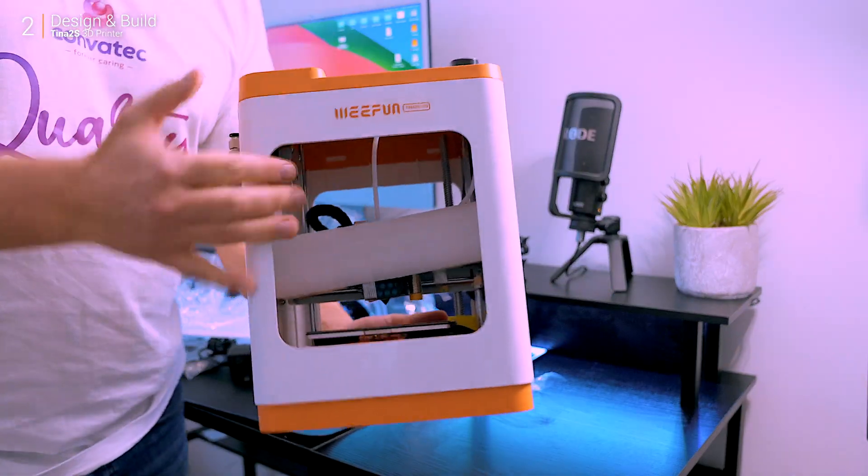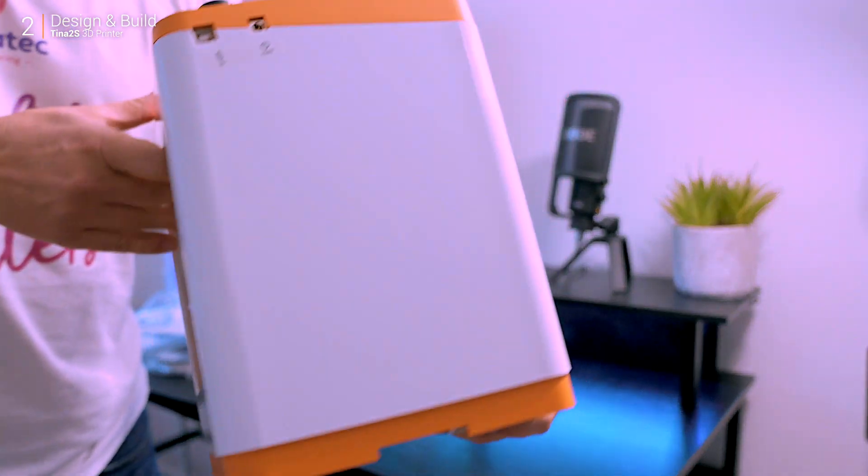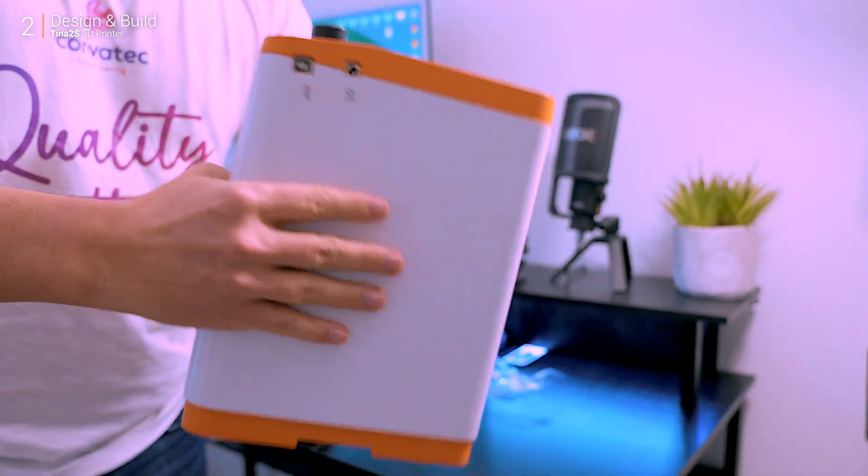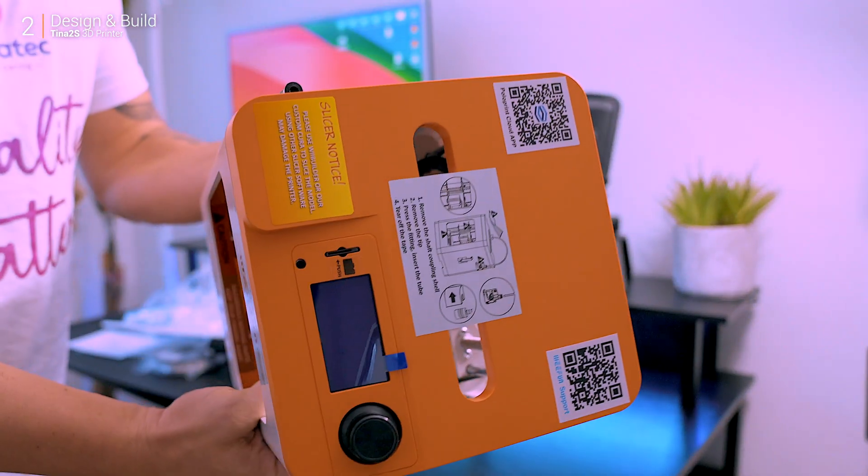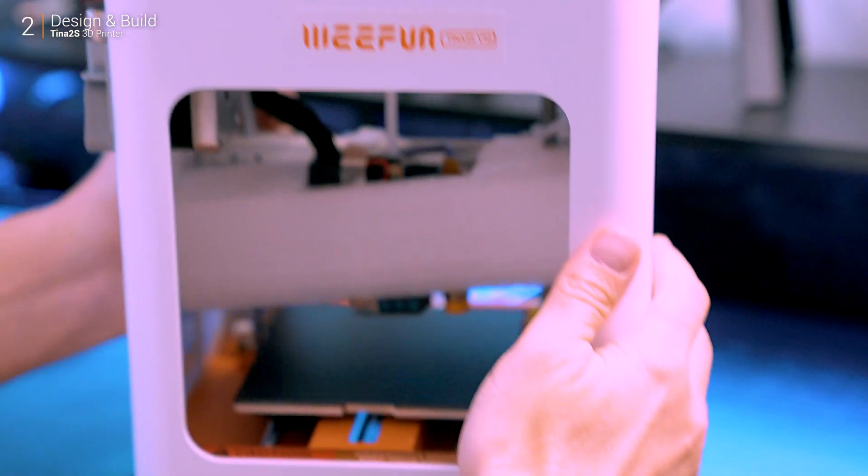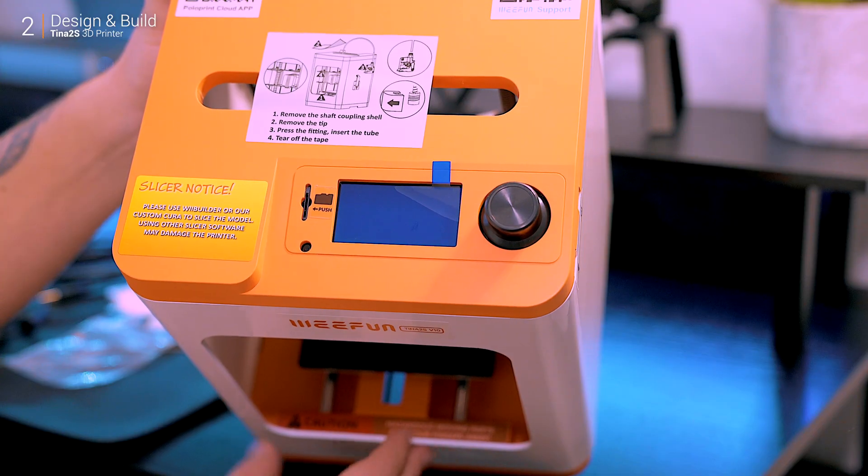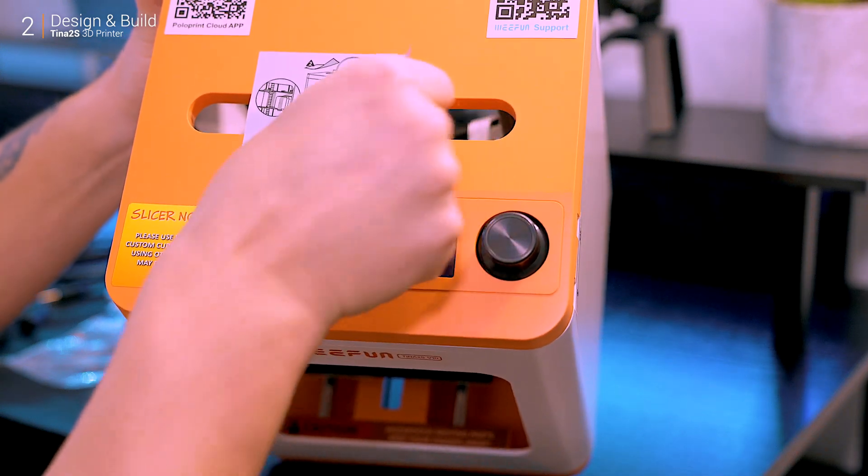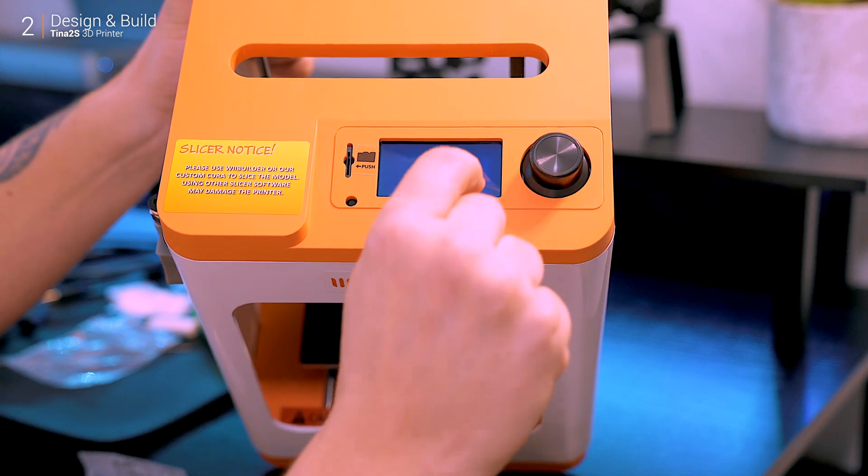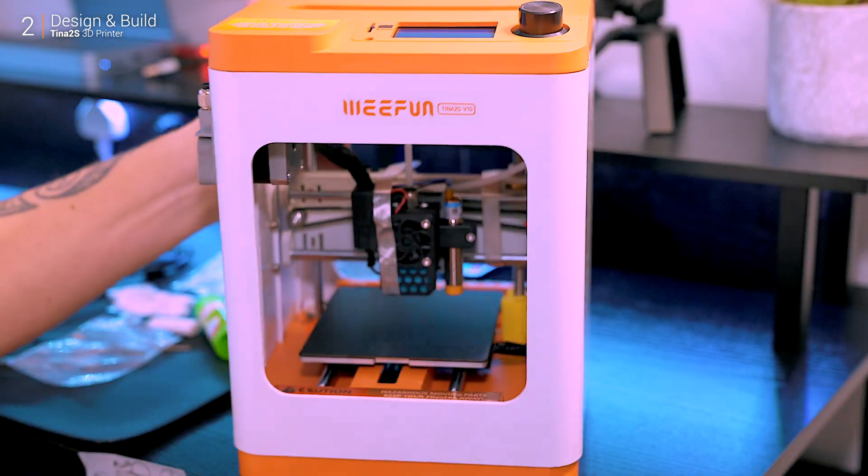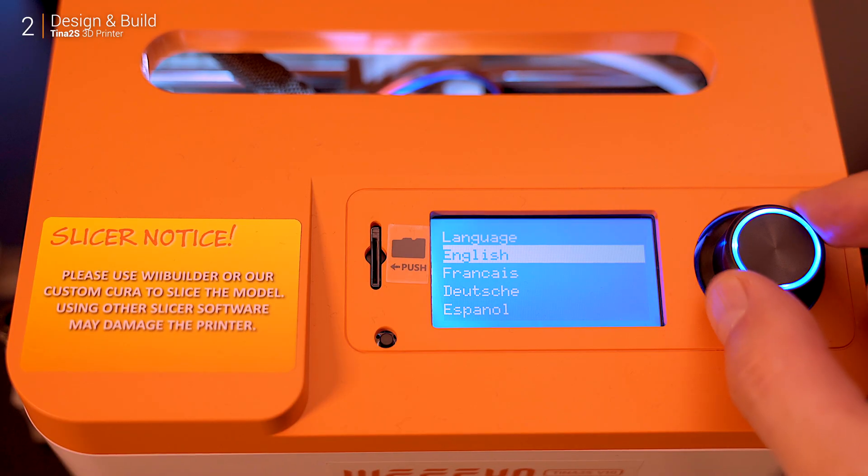Now let's talk about the printer. It's compact but sturdy, rocking a bright orange and white aesthetic that screams pro but also fun. It's semi-open, which keeps things approachable for adults and older kids, though you'll want to supervise if younger ones are around. On the top there's a bright LCD screen paired with a simple control knob—no touchscreens here, but it's intuitive enough to make up for it.